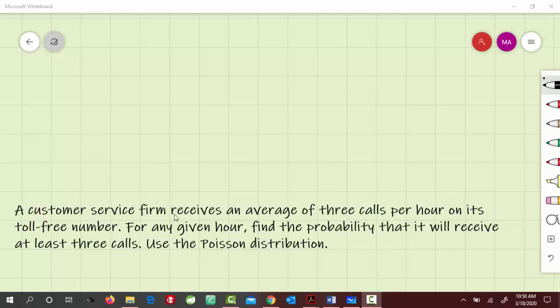A customer service firm receives an average of 3 calls per hour on its toll-free number. For any given hour, find the probability that it will receive at least 3 calls.